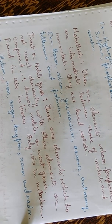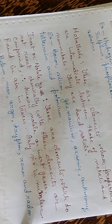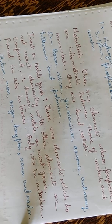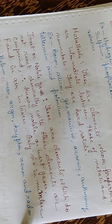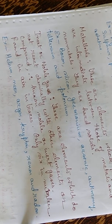Inert or noble gases are elements which do not react chemically with other elements or compounds — that is why they are called inert. They are found in air in traces, and only six of them are known: helium, neon, argon, krypton, xenon and radon.